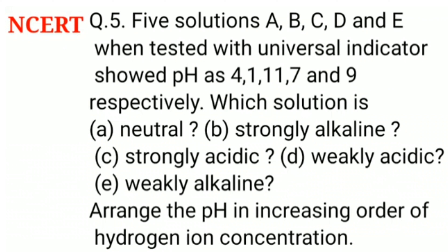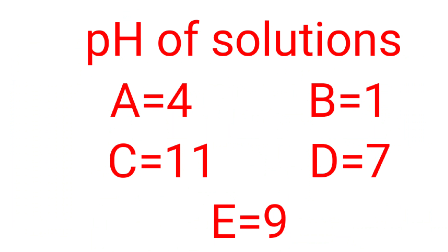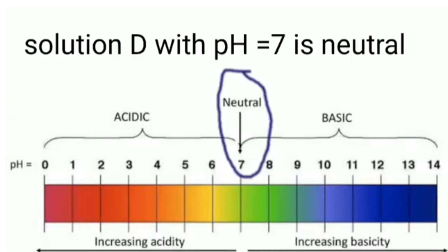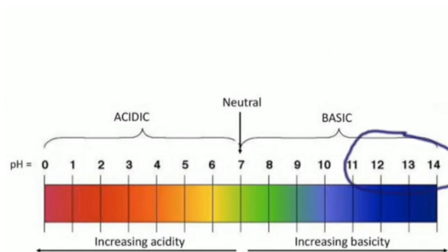Arrange the pH in increasing order of hydrogen ion concentration. The pH for the solutions are: A is equal to 4, B equal to 1, C equal to 11, D equal to 7 and E equal to 9. Solution with pH equal to 7 is neutral, hence D is the neutral solution.